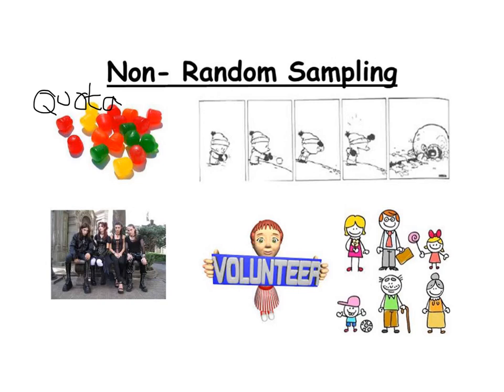The second type of non-random sampling is a snowball sample, which is most often used when researching crime. Snowball sampling is a useful technique when access to a group is difficult — it involves the sociologist finding one person they are interested in and asking them to refer them on to people who might be willing to take part. The reason it's often used with gangs and crime is that the sociologist will find one criminal who will then refer them on to other criminals. Whilst clearly useful where access is problematic, this approach could lead to the people in the sample being rather similar to one another.